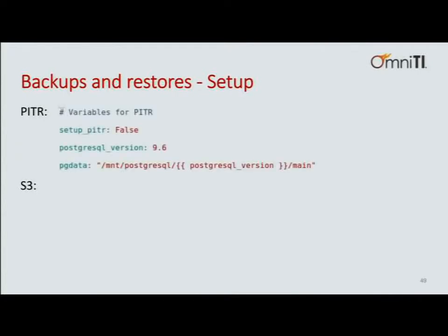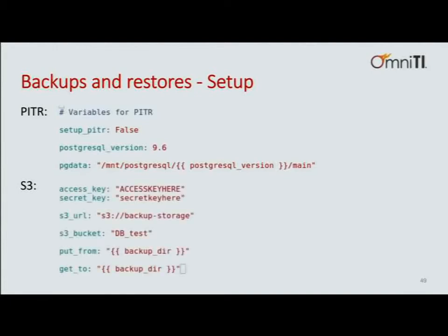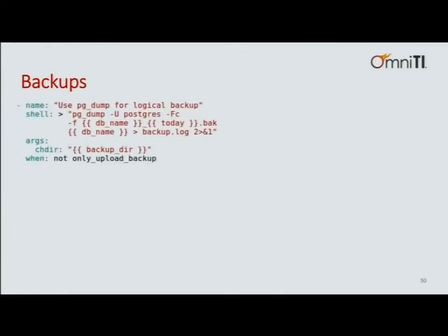Everybody needs backups. The first kind we'll talk about is point-in-time recovery. I have a flag for setting up point-in-time recovery, giving it all the specifications it needs — the PG data path — and the idea is to upload and store all my backups onto S3, which makes sense since Postgres is running on EC2. I'm giving it all the credentials, telling it which S3 bucket to use, and using a shell command. When I was writing this, Ansible was working on a Postgres module that does this, but it wasn't there at that time — if you're doing this now, it's probably available.